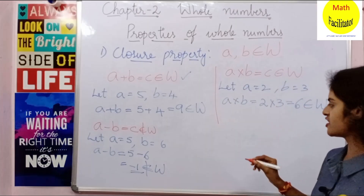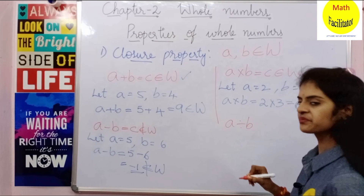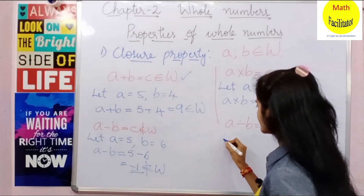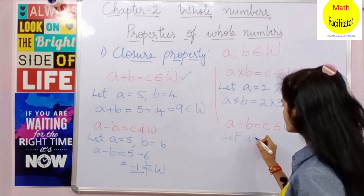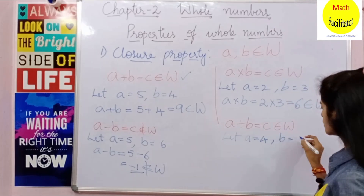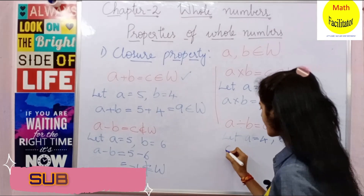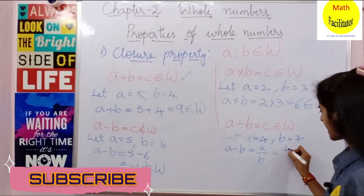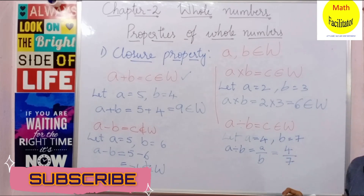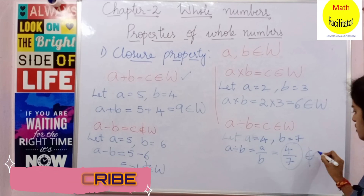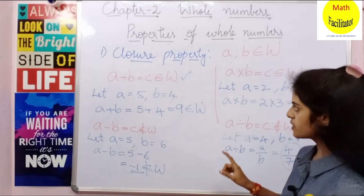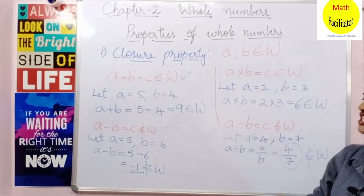Let us move to division. If A divided by B equals C, does it belong to whole numbers or not? Let A equal to 4 and B equal to 7. A divided by B is 4 by 7, which does not belong to whole numbers — it is a rational number. So this property is also not satisfied. Under closure property, only addition and multiplication are satisfied.